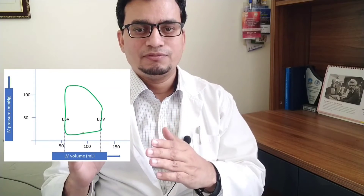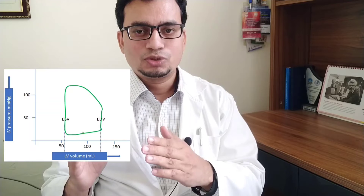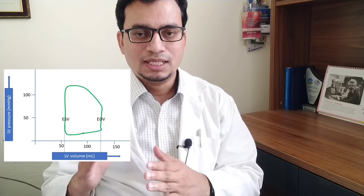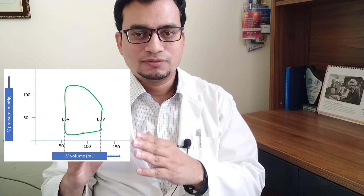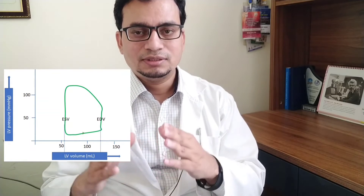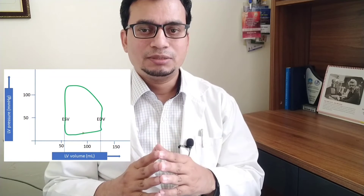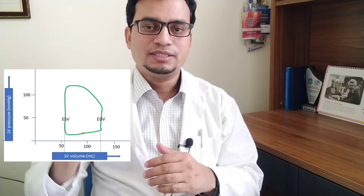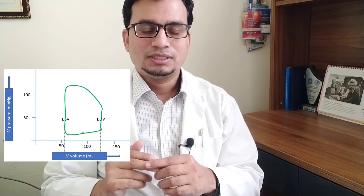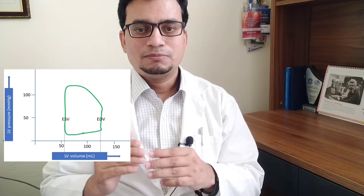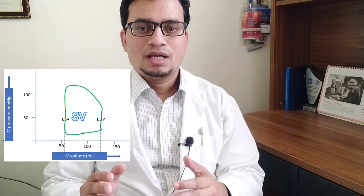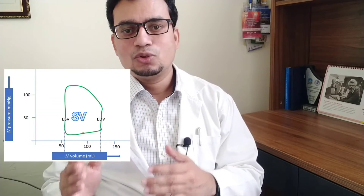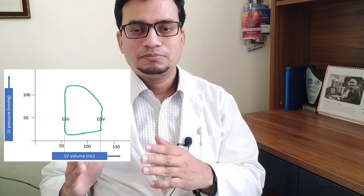This is the pressure-volume loop of the left ventricle. When the volume reaches the maximum point of myocardial stretch, called end-diastole, the volume contained in the ventricle at this point is called end-diastolic volume. After this, the ventricle starts contracting and building pressure very fast, then starts ejecting volume called the stroke volume, until the point where systole ends. The difference between end-diastolic volume and end-systolic volume is called the stroke volume, and the EDV is called the preload.